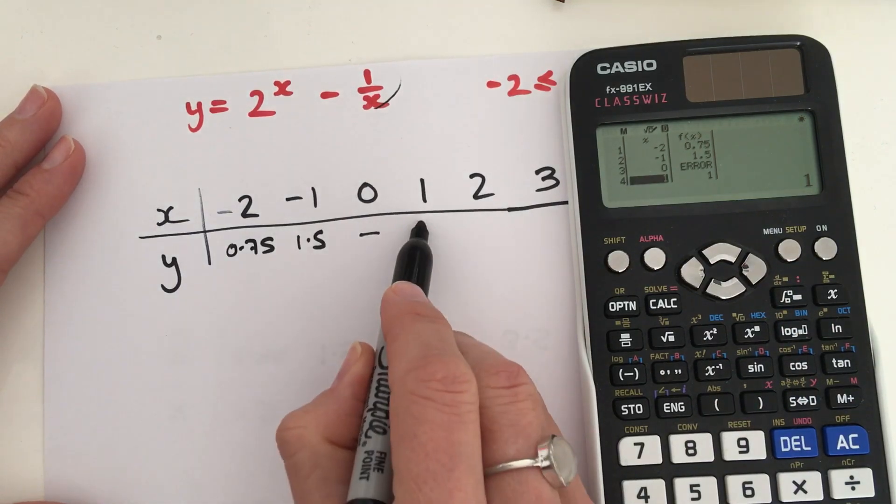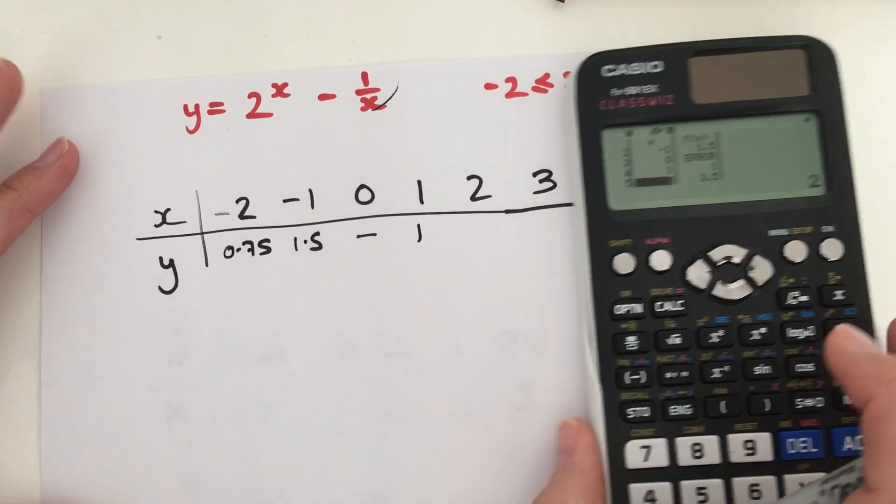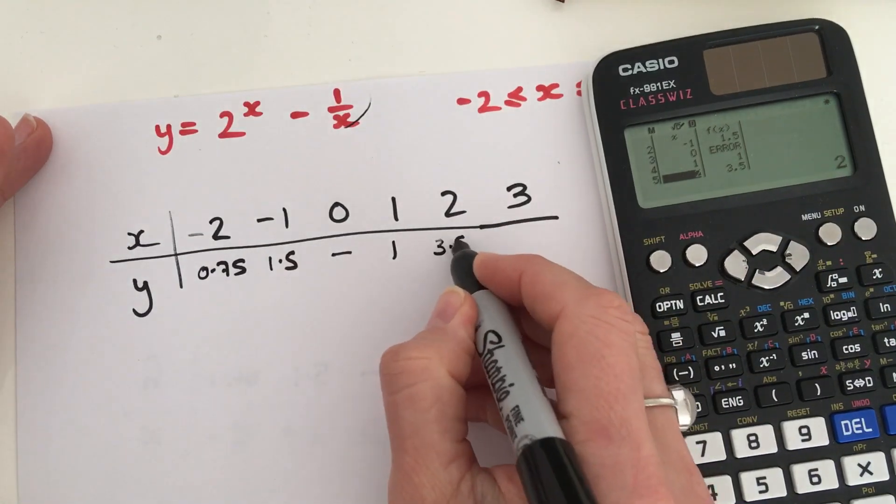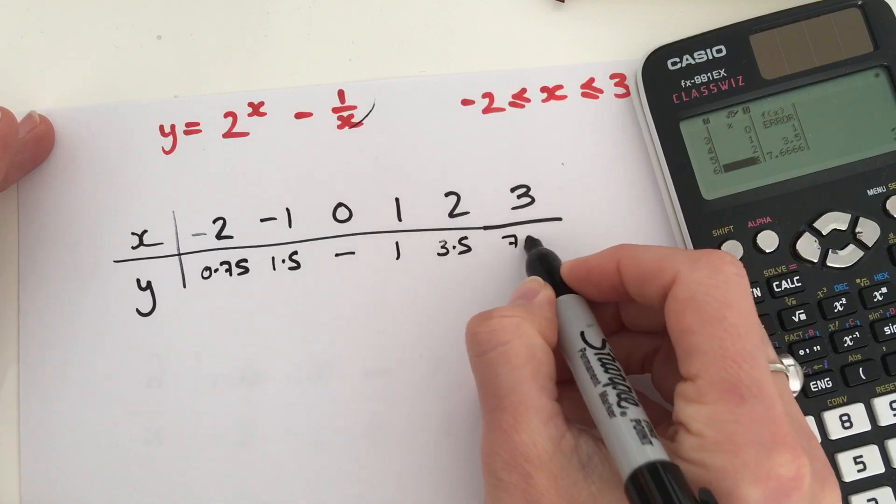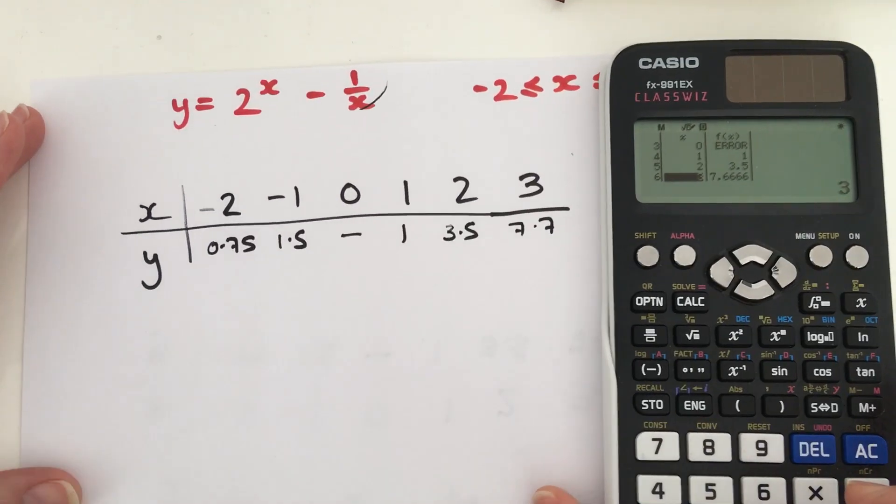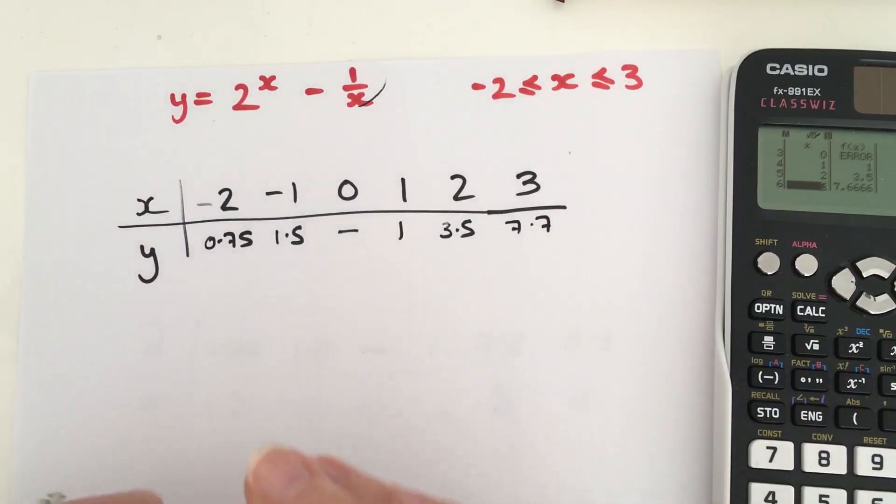So, when x is 1, y is 1. When x is 2, y is 3.5. And when x is 3, y is 7.7. And that is how we use our ClassWiz calculator to create a table of values.